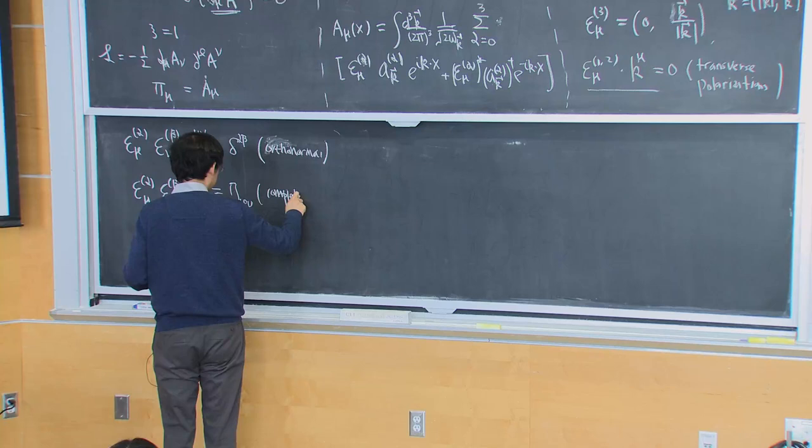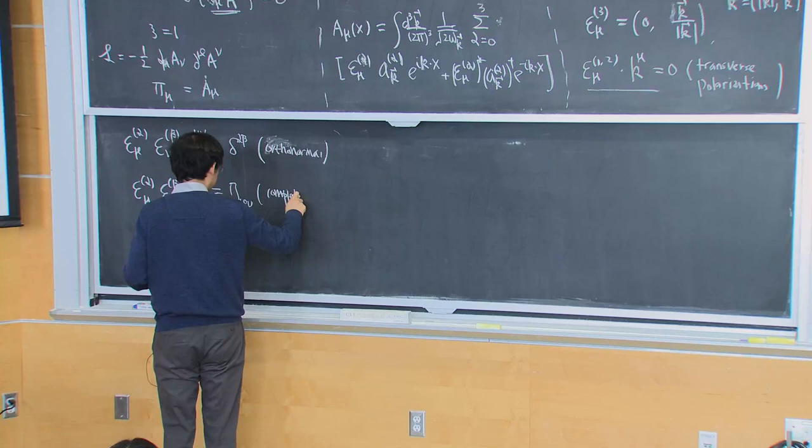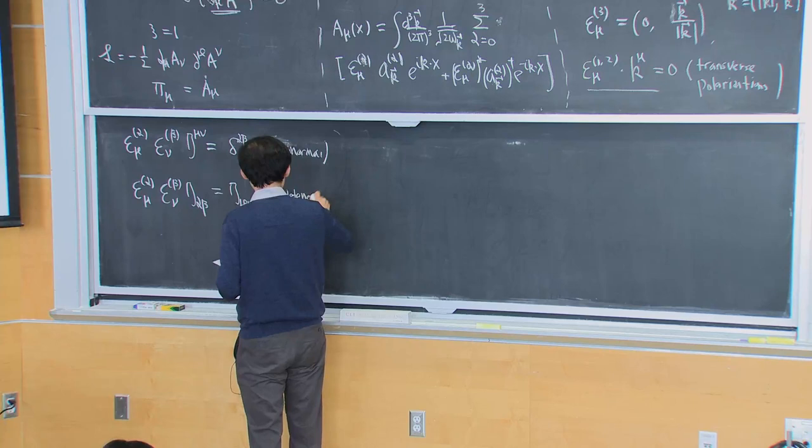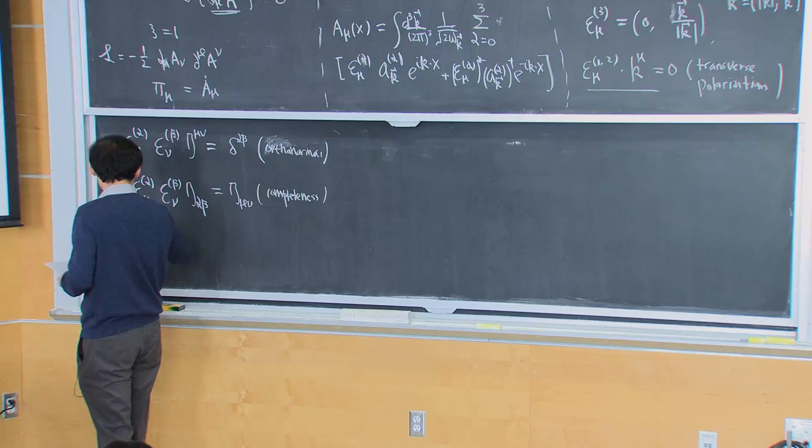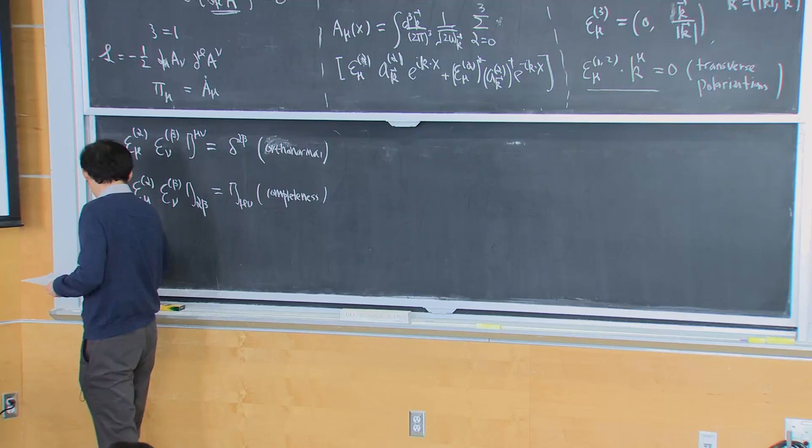So this is called completeness — they form a complete basis, and any Lorentz vector can be expanded in terms of them. If we take k to be in the z direction, the simplest choice would be just the standard basis vectors with the third one along z.